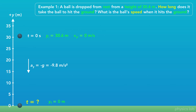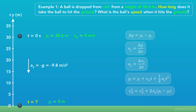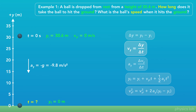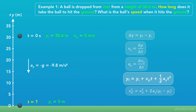So first, how long does it take the ball to hit the ground? The ball starts with 0 velocity, then it accelerates downwards, and we want to find the time when the y position is 0. The fourth kinematic equation relates the initial and final y positions, the initial velocity, time, and acceleration. We can use this equation because it has the variable we're trying to find, t, and we have values to plug in for everything else.